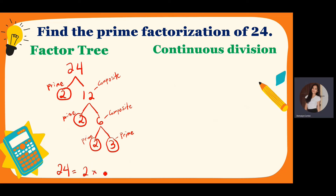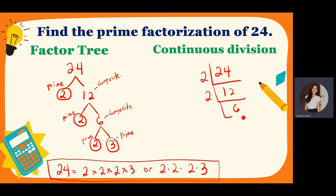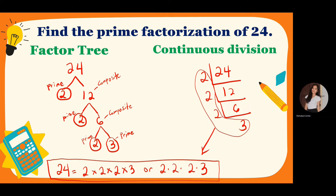All you have to do is write 24 and then arrange it from smallest to highest. So the smallest is 2 — there are three 2s — and the last is 3. So the prime factorization of 24 is 2 times 2 times 2 times 3. And for continuous division, it's still the same: 24 divided by 2 is 12. 12 divided by 2 is 6. And 6 divided by 2 is 3. And these are the prime factors: 2, 2, 2, 3.